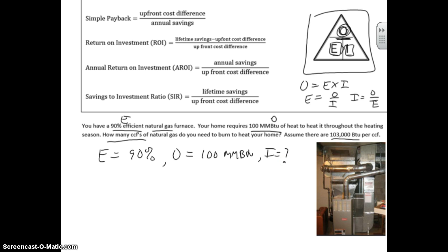Let's start with our equation. Our input equation is output over efficiency. Our output is 100 mmBTU, and using our knowledge of metric prefixes, we know that that's 100 times 10 to the 6th BTU. So let's just plug and play here. 100 times 10 to the 6th BTU divided by the efficiency, which is 90%, which is 0.90.